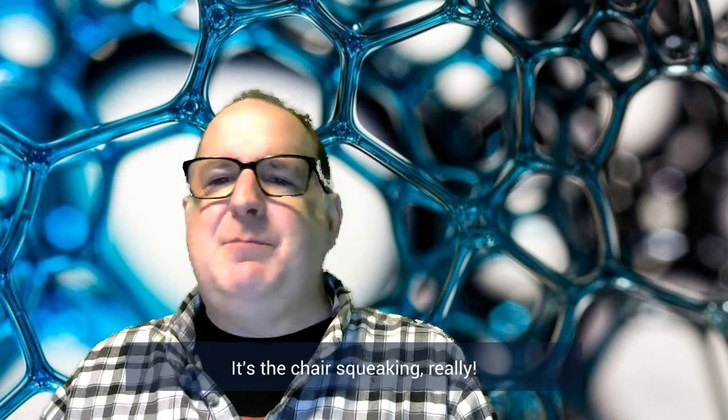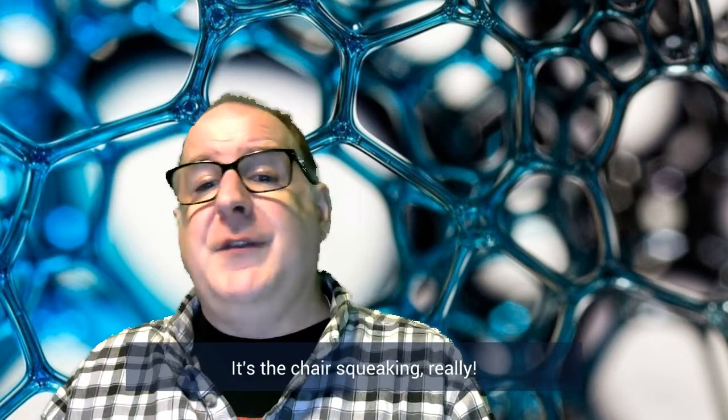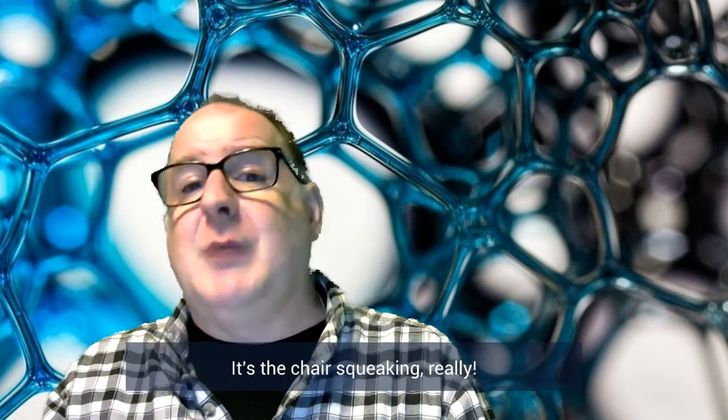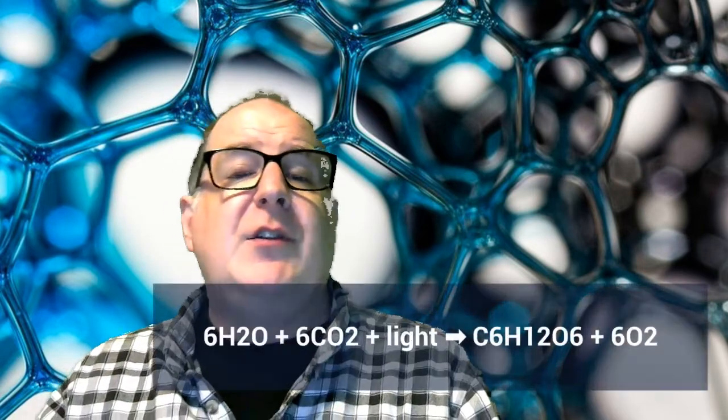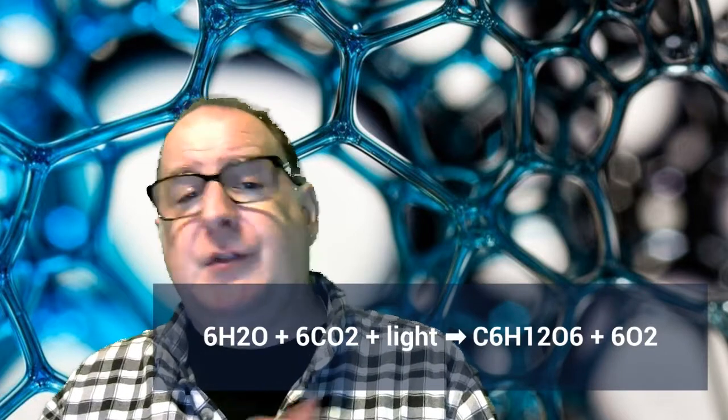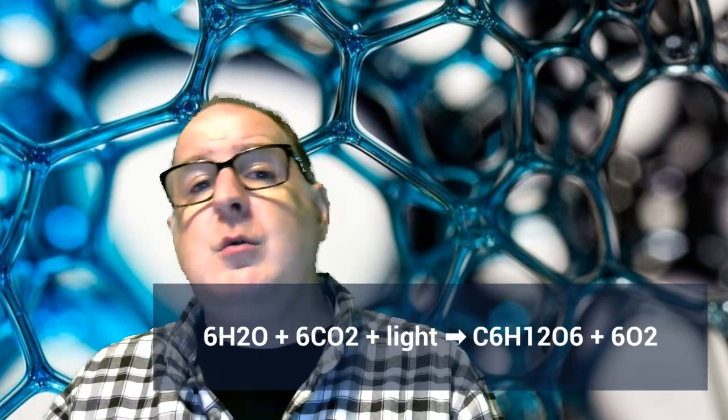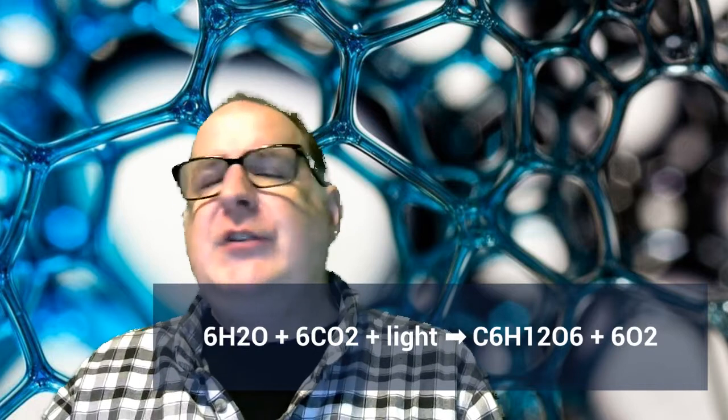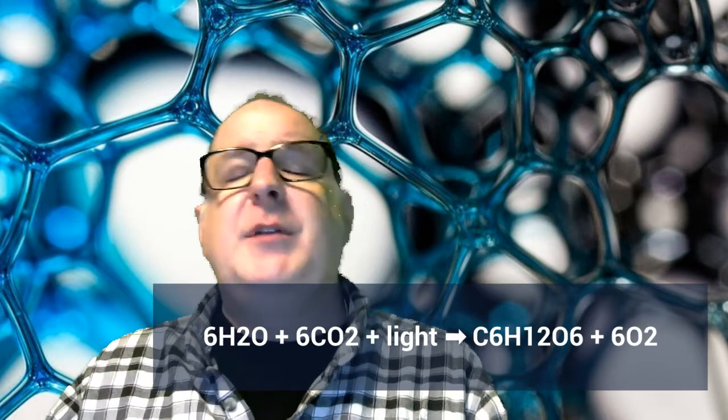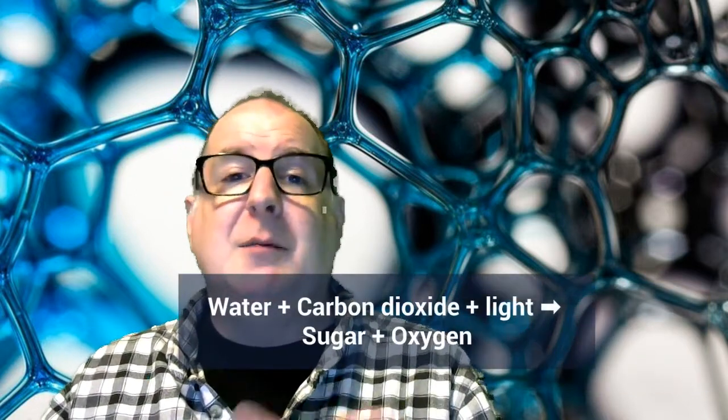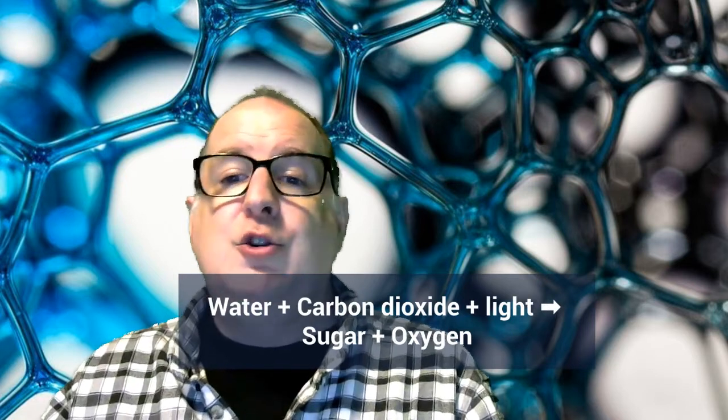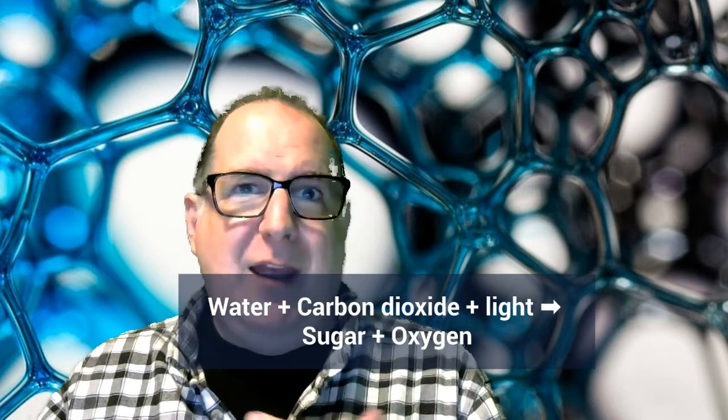Now, let's look a little deeper at the equations for photosynthesis and aerobic cellular respiration. The equation for photosynthesis is 6H2O plus 6CO2 plus light arrow C6H12O6 plus 6O2. Well, let's just simplify this to water plus carbon dioxide plus light arrow sugar plus oxygen. And that arrow means produces or makes.